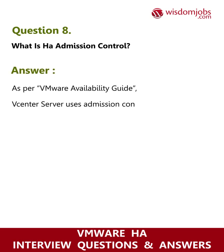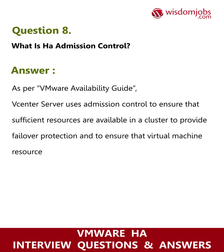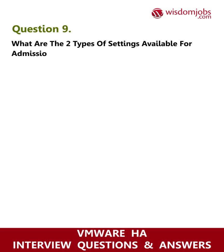Question 8: What is HA admission control? Answer: As per the VMware Availability Guide, vCenter Server uses admission control to ensure that sufficient resources are available in a cluster to provide failover protection and to ensure that virtual machine resource reservations are respected.